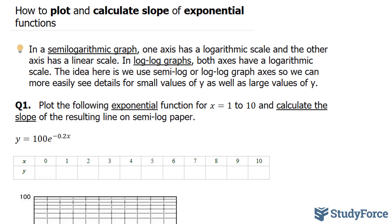That being said, question one reads: plot the following exponential function for x equals 1 to 10 and calculate the slope of the resulting line on semi-log paper. The function that we are operating with is y equals 100 times e to the power of negative 0.2x.